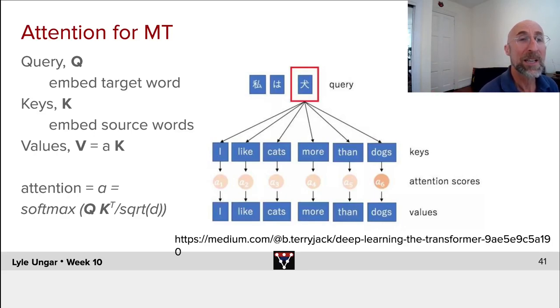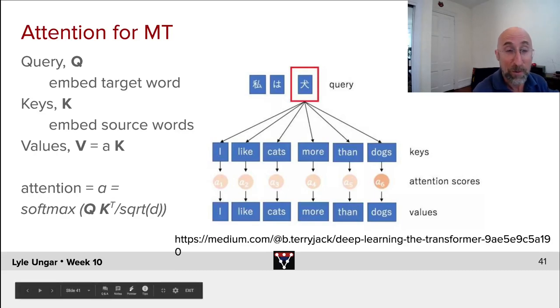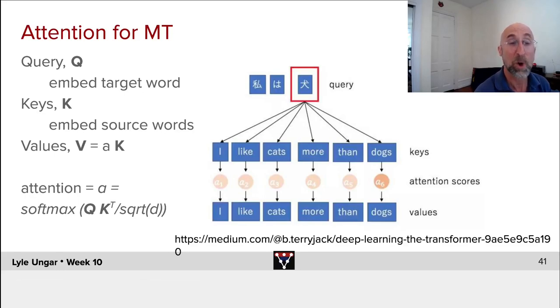So we embed all the source words as the keys, we then embed the hidden layer feeding into the thing we're trying to ask about, and then we will compute some attention, for example the softmax over all of these queries times keys of how similar is the query times the key. This is just a whole bunch of dot products done in parallel and then normalize by the square root of the dimension 300 of the embeddings.